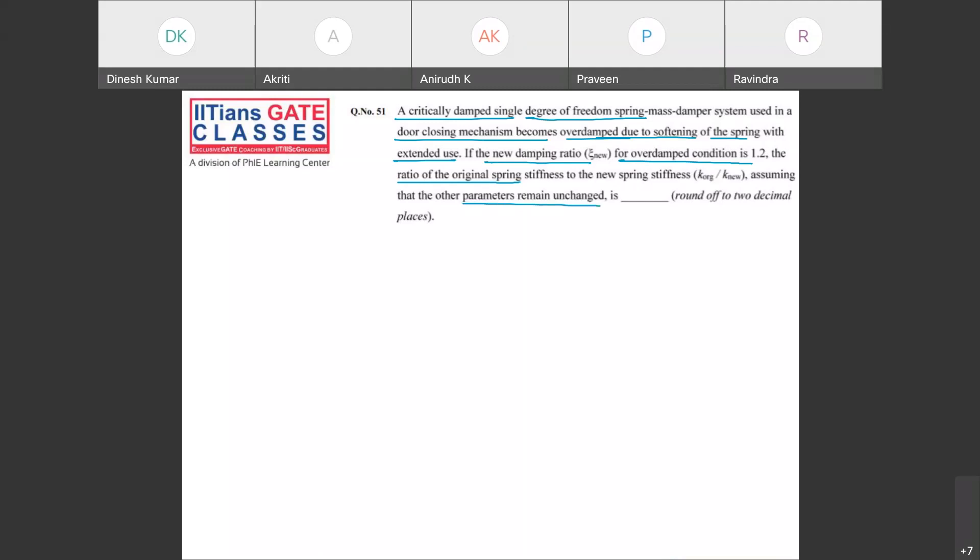Usually we know this zeta is given by C by Cc, and this door mechanism will be critical mechanism. We use critical damping. Initially your door mechanism is critically damped. So what will be your Cc? It will be 2 times square root of K₁M.